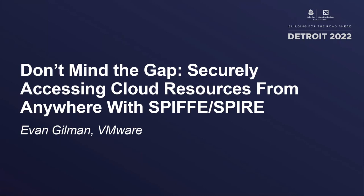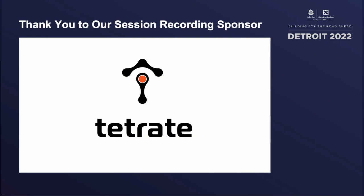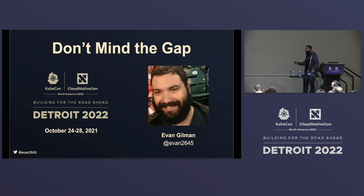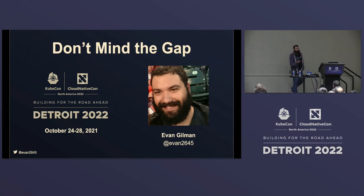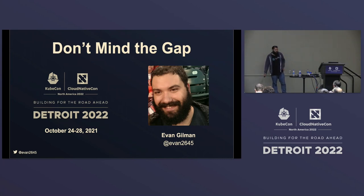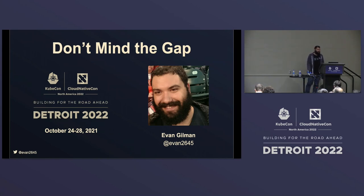Hello everybody, officially day one — or day plus one or two if you've been to some of the co-located events. Thank you for coming. I'm Evan Gilman, I am a maintainer on the SPIFFE and SPIRE projects. I've been on those projects since they were started, about five and a half years ago, maybe 2017. The title of the talk today is 'Don't Mind the Gap.' We're going to be talking predominantly about how to use SPIFFE identities to authenticate to third-party resources, specifically the three major cloud providers.